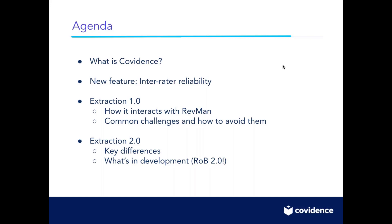We will look at extraction 2.0, which is not recommended for Cochrane reviews just yet because it doesn't link up with RevMan. However, some users are interested in using it for other data extraction points that don't need to link up with RevMan directly, and there's a lot in development for when it will be linked up. It would be good to start having a look at how extraction 2.0 works so that when it's ready to be rolled out, you all feel more empowered to start using it. I'll also talk briefly about the risk of bias 2 form in development for extraction 2.0, and hopefully give you all the opportunity to provide some user feedback to the design process.